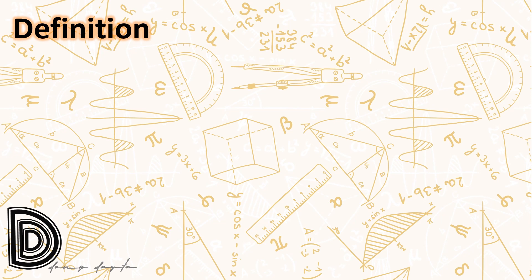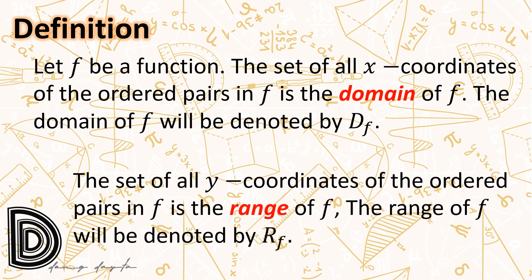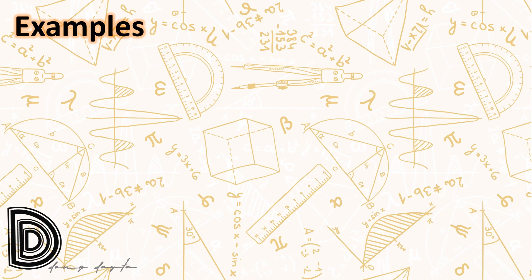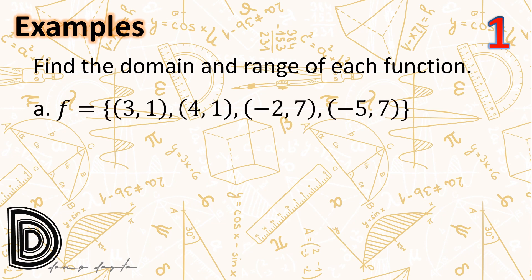Let's proceed to some definitions. Let F be a function. The set of all x-coordinates of ordered pairs in F is the domain of F, denoted by D sub F. The set of all y-coordinates of the ordered pairs in F is the range of F, denoted by R sub F. Let us have some examples: find the domain and range of each function.